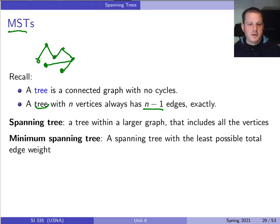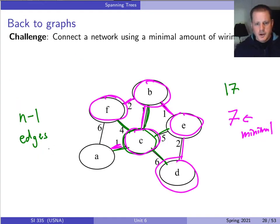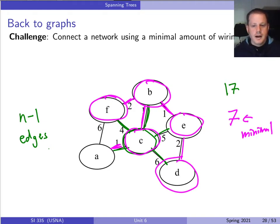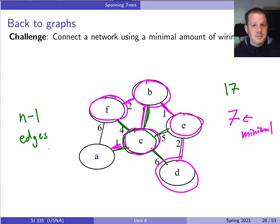One of the cool things about this problem is that there are multiple natural ways to solve it, and they actually work — which isn't always the case. But first, let's mention something that doesn't work: divide and conquer. It might seem like a sensible idea, but the problem is that splitting the graph requires finding a 'cut' with certain properties, and finding such a cut is itself a really hard algorithmic problem.